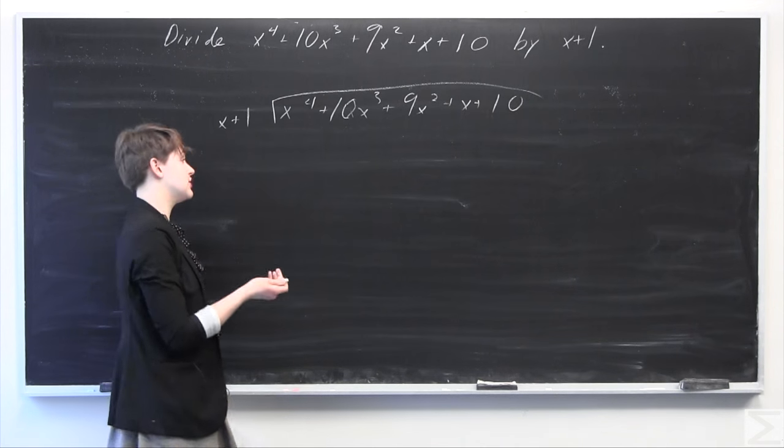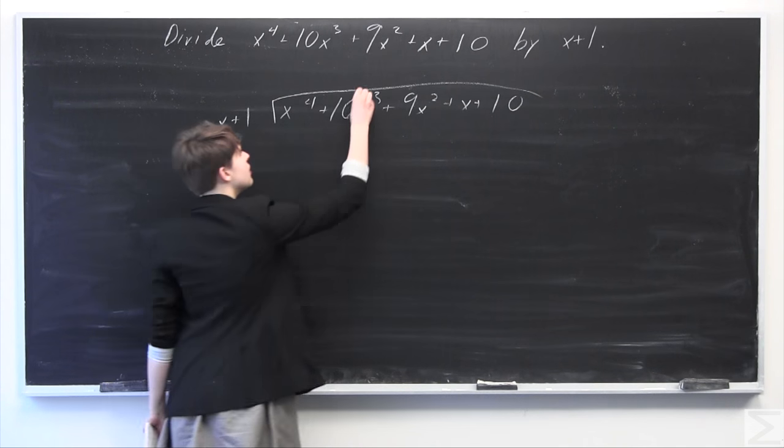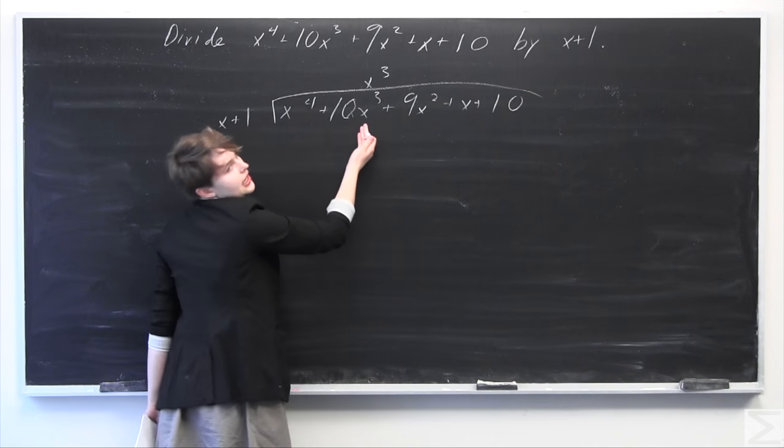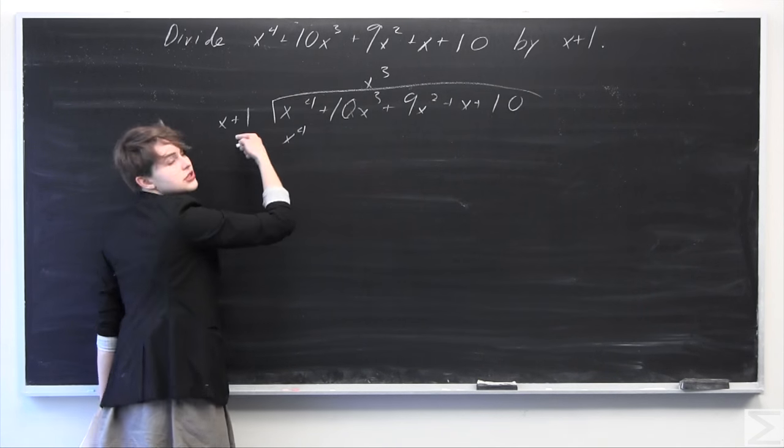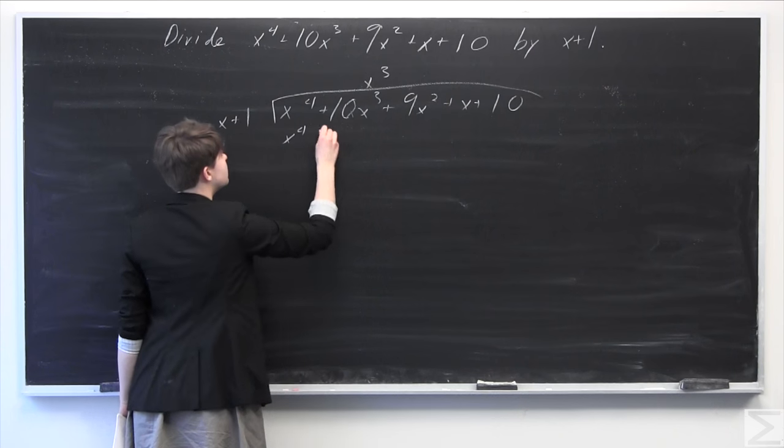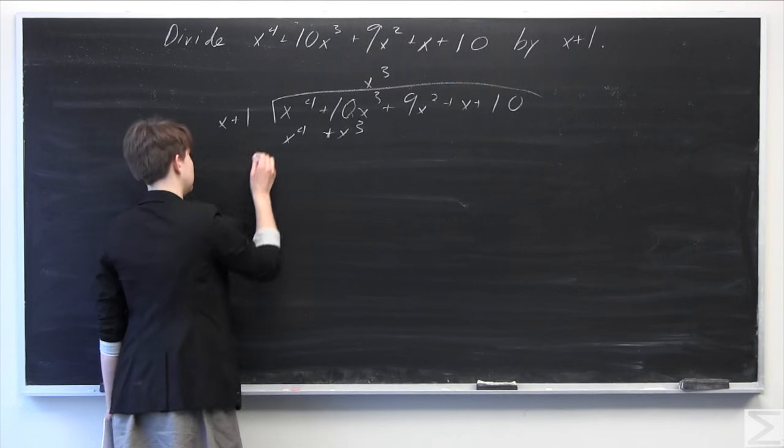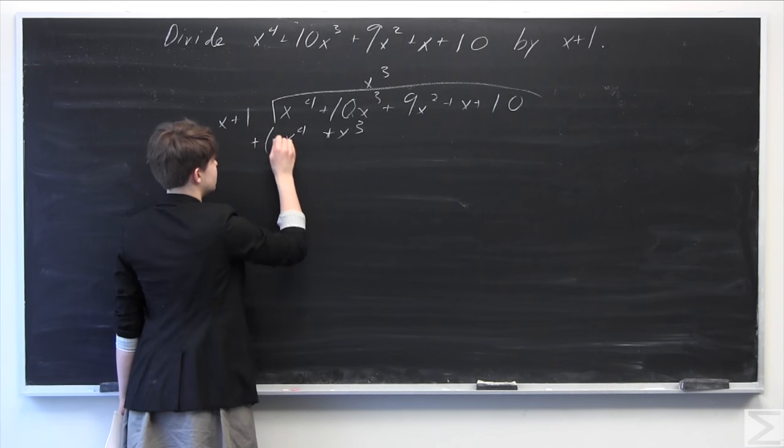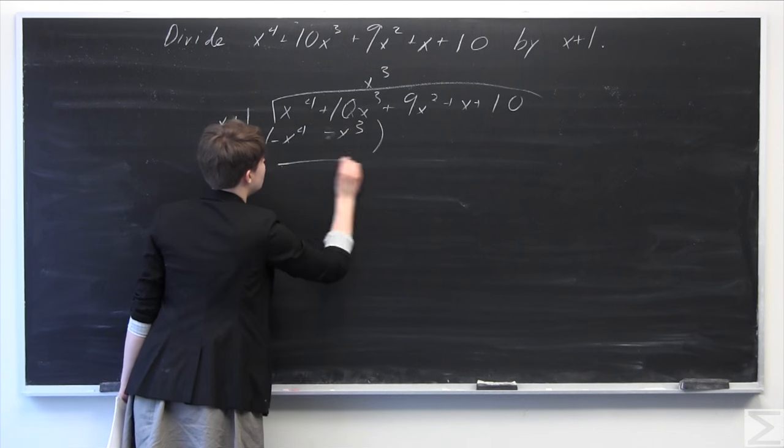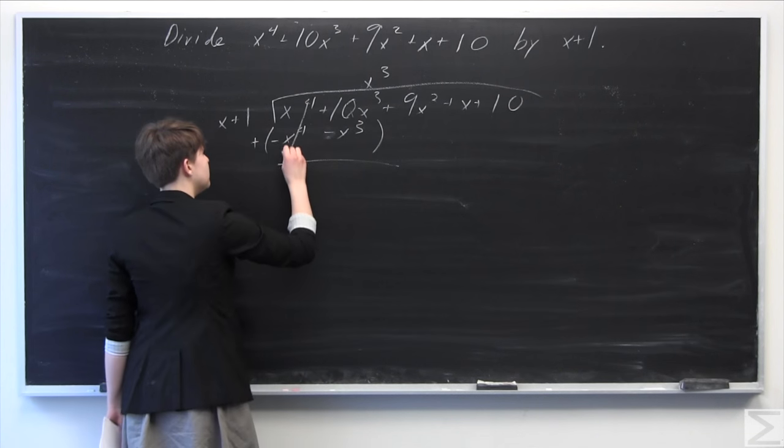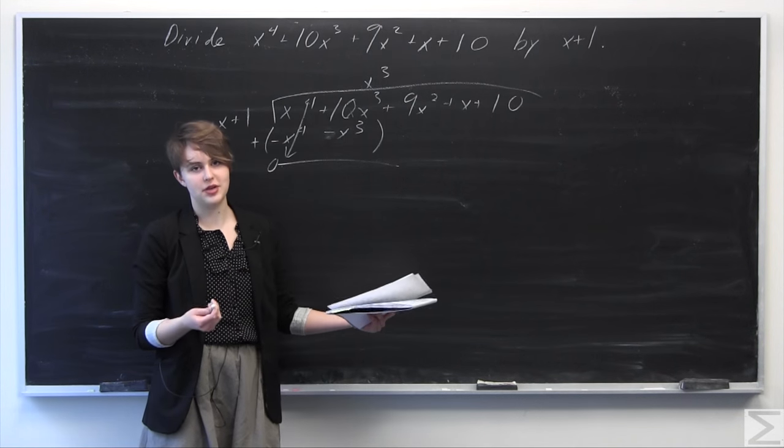In order to start this problem, we're going to multiply x by x cubed in order to get x to go into x to the fourth. So you put the x cubed here above the 10x cubed there. So x cubed times x is going to be x to the fourth, and x cubed times 1 is going to be x cubed. So we have x to the fourth plus x cubed, and we're going to subtract everything. So we can just distribute that negative sign here. This positive turns to negative. So x to the fourth minus x to the fourth is going to be zero. And 10x cubed minus x cubed is going to be 9x cubed.